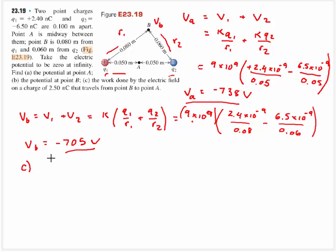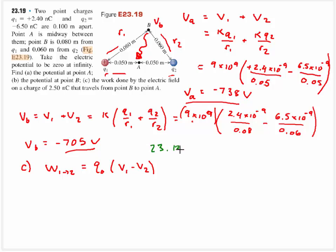For part C we're looking for the work it takes to go from point B to point A. It turns out that work doesn't depend on the path. The work to go from point 1 to point 2 equals the test charge multiplied by the voltage at 1 minus the voltage at 2. This corresponds to equation 23.13, written in terms of A's and B's.